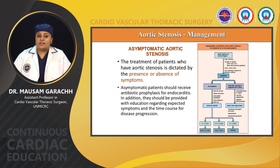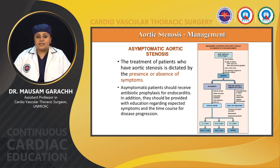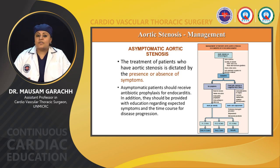Management of the patient with aortic stenosis is dictated by the presence or absence of symptoms. Asymptomatic patients should receive antibiotic prophylaxis for endocarditis and should be provided education regarding expected symptoms and disease progression. Management is determined by echocardiography assessing valve anatomy, severity of stenosis, other valves, and LV response to pressure overload. If symptoms are present, assess for contraindications to surgery, evaluate the coronaries, optimize hemodynamics, and proceed to aortic valve replacement using pulmonary homograft, bioprosthetic, or mechanical prosthesis. If no symptoms, treat risk factors, educate the patient, give endocarditis prophylaxis, and perform echocardiographic follow-up.